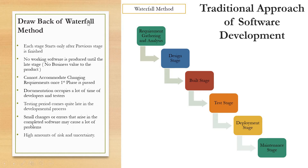Now there are many drawbacks in the Waterfall method. Each stage starts only after the previous stage is finished. No working software is produced until the late stage, meaning no business value until the last stage. It cannot accommodate changing requirements once the first phase is passed. Testing comes quite late in the development process, and small changes or errors in the completed software may cause a lot of problems. This method involves a high amount of risk and uncertainty.